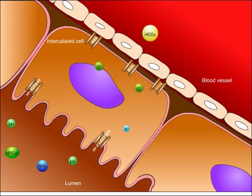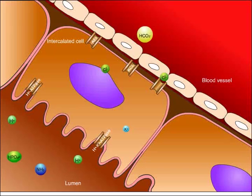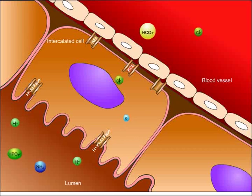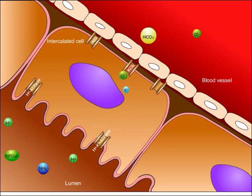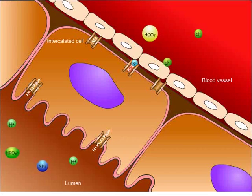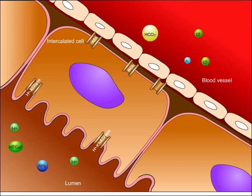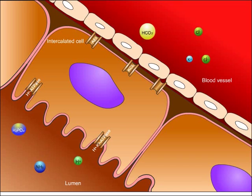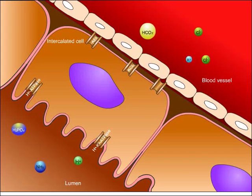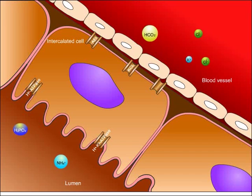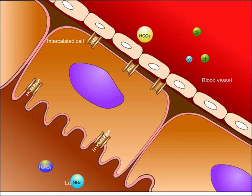Chloride is then reabsorbed back into the blood either passively due to a concentration gradient, or actively as it is pumped back into the blood with potassium via the potassium-chloride pump. In the collecting duct lumen, hydrogen ions bind to monohydrogen phosphate to form dihydrogen phosphate, and they also bind to ammonia to form ammonium. Both dihydrogen phosphate and ammonium are excreted in the urine.